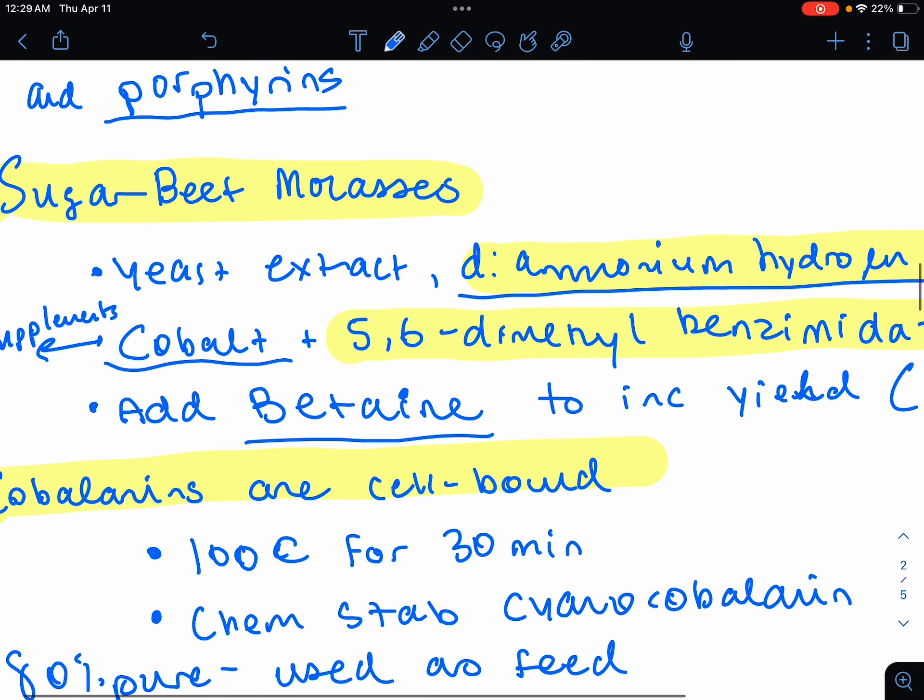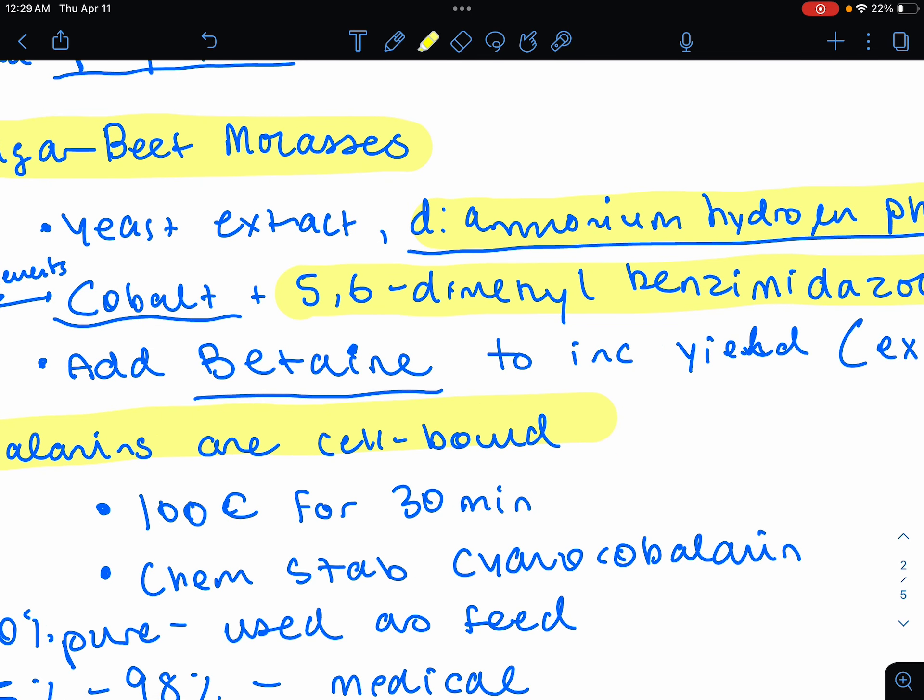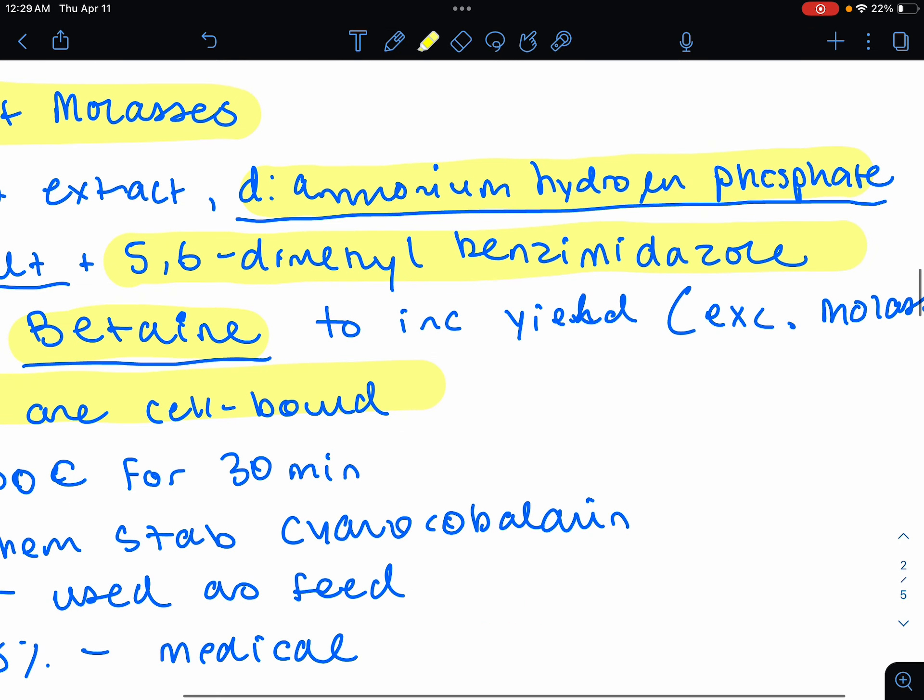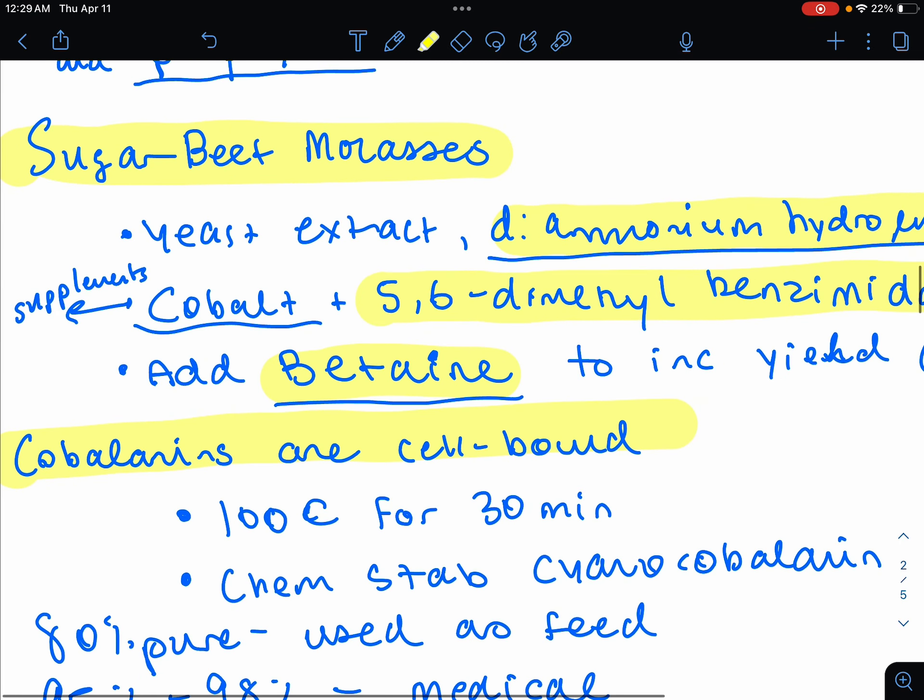You also add betaine to increase the yield. However, if you have molasses, if you're using sugar beet molasses, this has this betaine in it already.